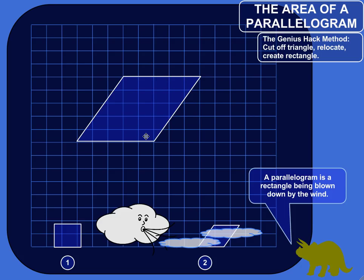So that should be pretty exciting. The areas of rectangles are easy to figure out because it's just the length times the width. So we're going to chop up this parallelogram and rearrange it to make life easier on ourselves. As you'll see, a parallelogram is really kind of just like a rectangle that's being blown down by the wind. That's how I view it, anyway.